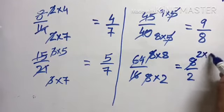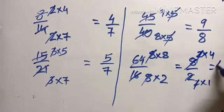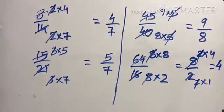And this is 2 times 1. So 2 and 2 cut. Our answer is 4 by 1, meaning 4. In the denominator we don't write 1, understood?